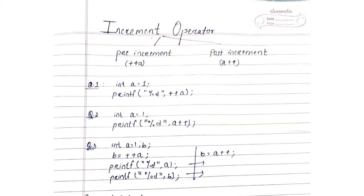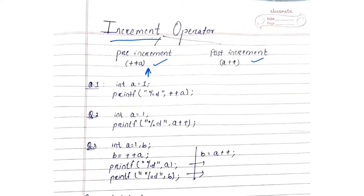Hello guys, welcome to Placement Prep. Today we are going to learn the increment operator. It is of two types: pre-increment and post-increment. In pre-increment (++variable), the value is first increased then assigned. In post-increment, the value is first assigned then increased.